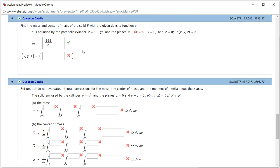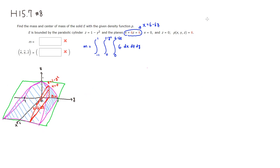It came back and looks like we got the mass correctly. Now let's find x-bar. In order to find x-bar, we have to find the moment with respect to the yz-plane, M_yz. The bounds are exactly the same: x from 0 to 6 minus 6z, z from 0 to 1 minus y squared, y from negative 1 to 1. But we multiply by x, so the integrand becomes 6x.